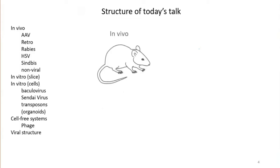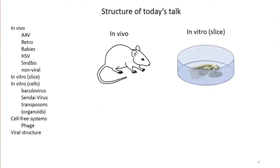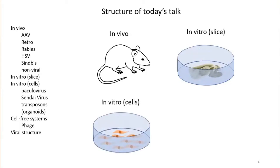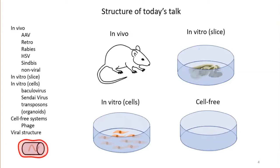The talk will break down as follows: I'll briefly cover usages of viruses in vivo, then in vitro slice-type preparations, then more standard in vitro preparations, then cell-free systems. I'll end by briefly discussing how viruses are catalogued and structured in terms of their biological properties — which is very hard to do, given the dramatic diversity of viruses and their ability to mutate extensively.